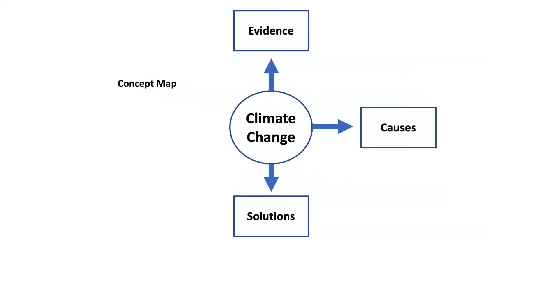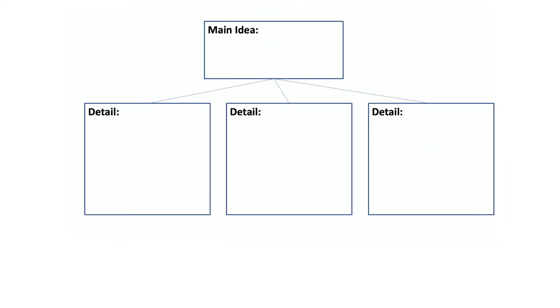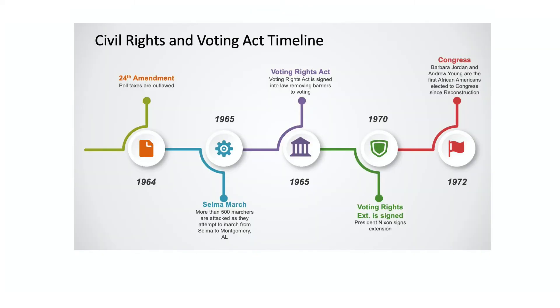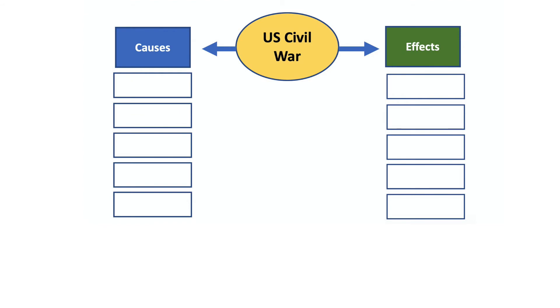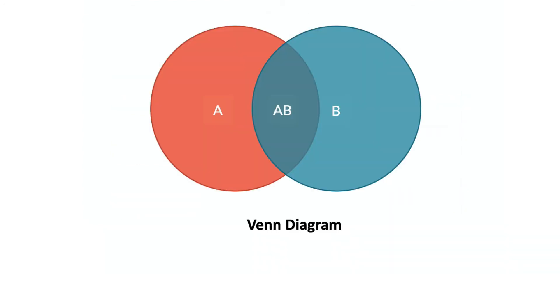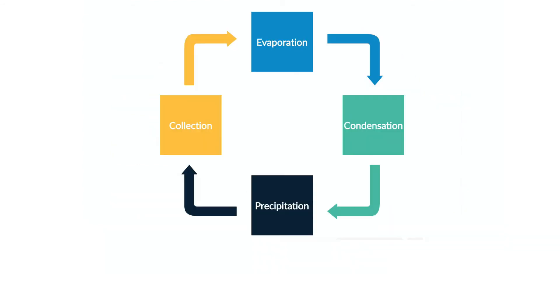Some common graphic organizers include concept maps, main idea diagrams, timelines, story maps, cause and effect charts, Venn diagrams, and sequence, process, and flow charts.